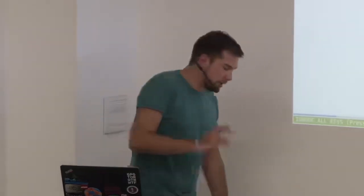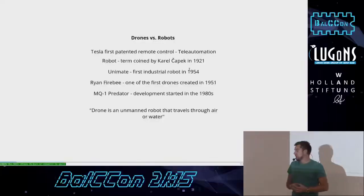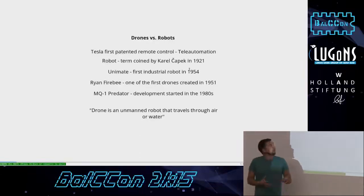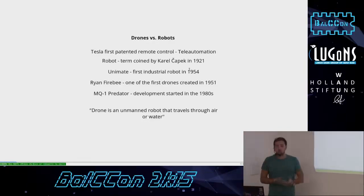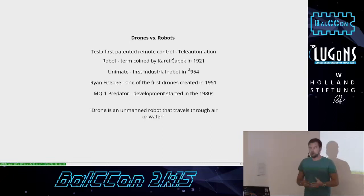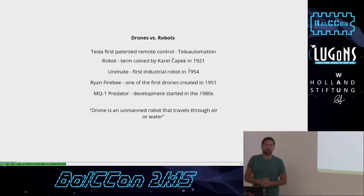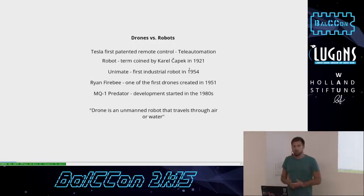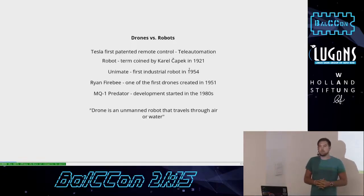First of all, I'd like to talk about drones versus robots. A robot is something that doesn't need direct human interaction to work. Tesla was the first one who created something of a robot or a drone, a remote-controlled ship about two meters long. You can see that ship in his museum in Belgrade. Later on, the official term robot was coined by Karel Čapek in the 1920s.